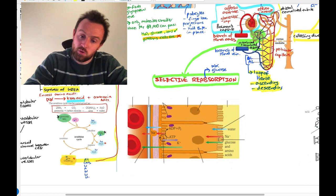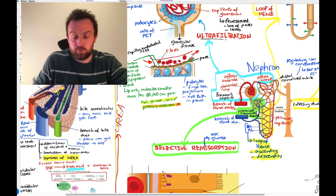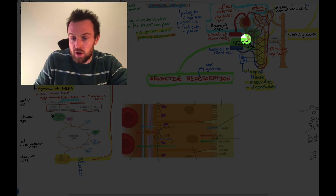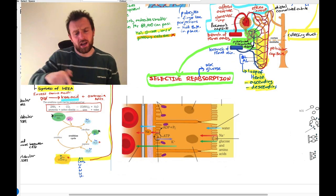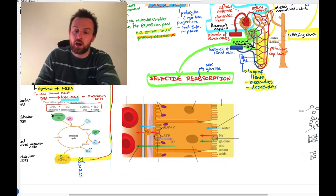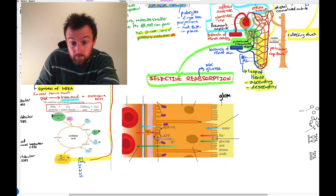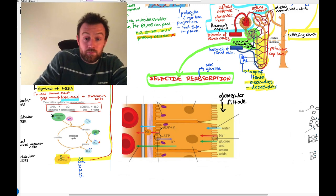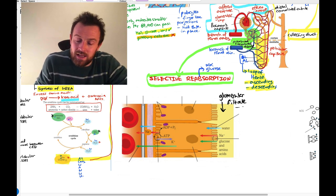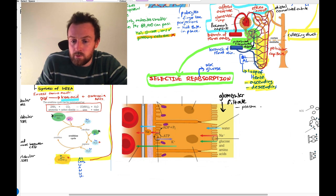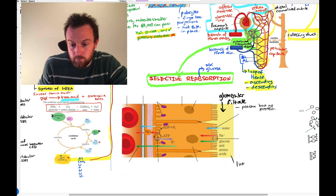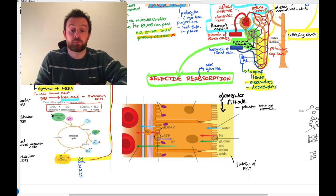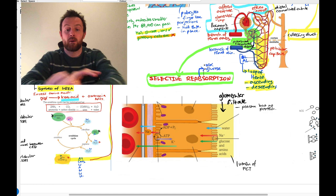Moving on to selective reabsorption in the proximal convoluted tubule. The glomerular filtrate flows down the curvy PCT — it's twisty and turny to maximize surface area. The filtrate in the lumen of the PCT is basically the same as plasma but with no protein. The idea of selective reabsorption is to reabsorb amino acids and glucose from the glomerular filtrate. Those are the two major things on the syllabus.